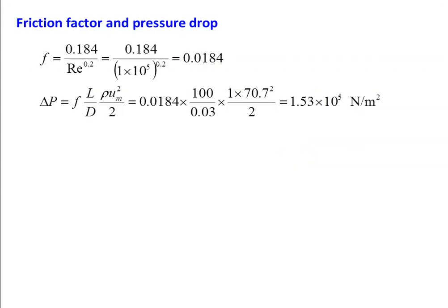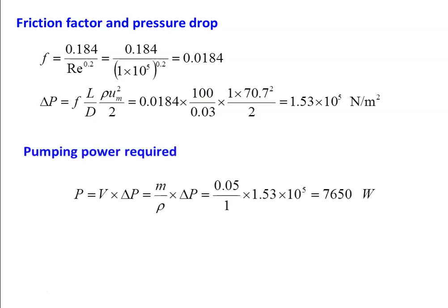Friction factor for turbulent flow from the data book: F = 0.184 / Re^0.2 = 0.184 / (1 × 10⁵)^0.2 = 0.0184. Pressure drop: ΔP = F × (L/D) × (ρ·Um²/2) = 0.0184 × (100/0.03) × (1 × 70.7²/2) = 1.53 × 10⁵ N/m². Pumping power = 7650 W.